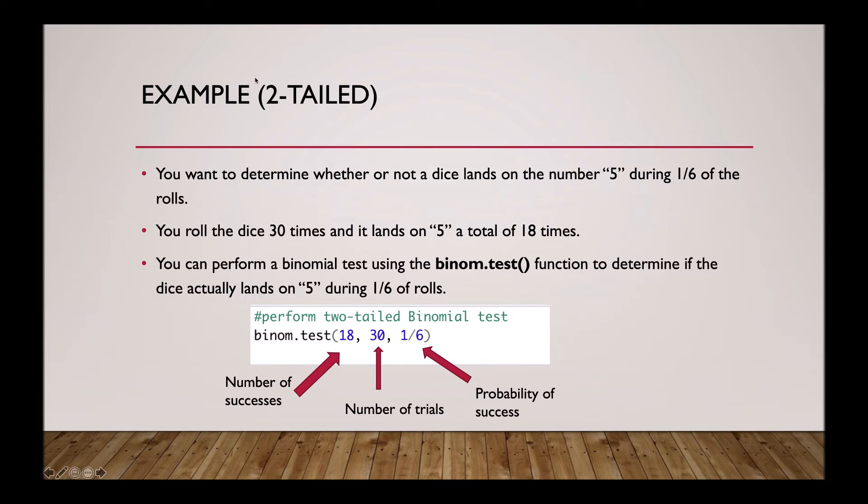To perform the binomial test, you can use the binom.test function to determine if the dice is expected to land on a 5 during one out of six of the rolls. Here is the code of how to run this binomial test. Remember the syntax from the slide before.